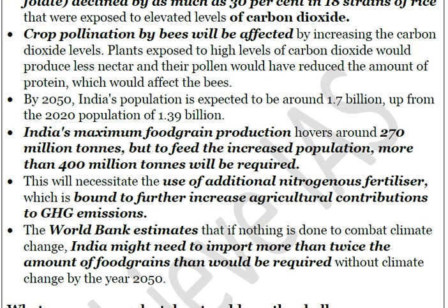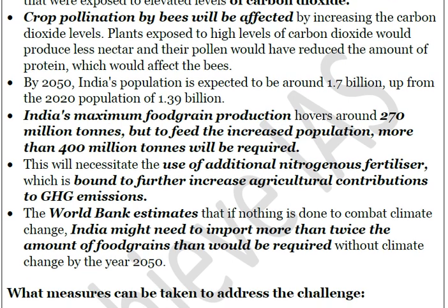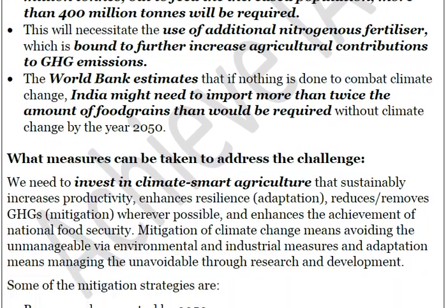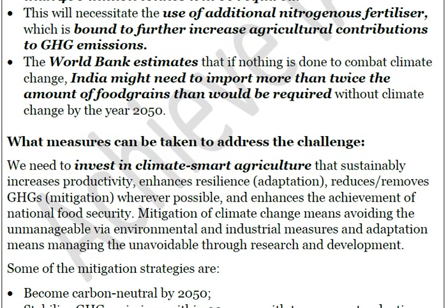There is a clear conflict: population will increase, food grain production will decrease due to rising temperature, more nitrogen fertilizers will be used, and that will further increase greenhouse gas concentration, hastening climate change. The World Bank has estimated that India might need to import more than twice the amount of food grains by 2050 compared to what would be required without climate change — for example, if 200 million tons were needed without climate change, 400 million tons would be needed with it.